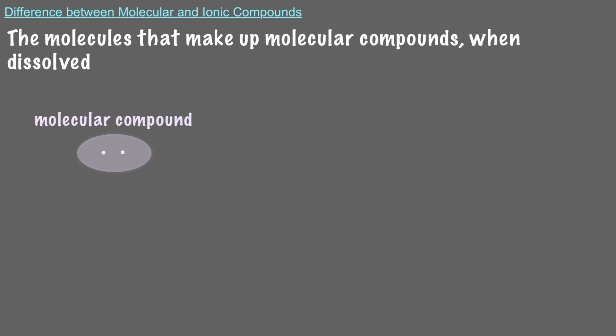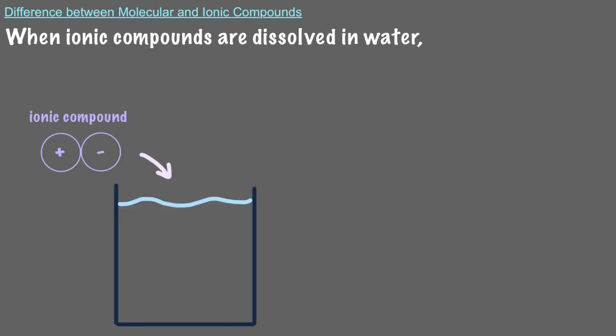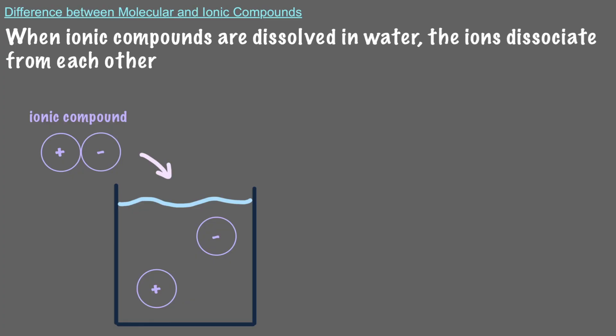The properties we've just learned about molecular and ionic compounds have implications on how they behave when dissolved in water. The molecules that make up molecular compounds, when dissolved in water, stay intact. That is, they do not dissociate. However, when ionic compounds are dissolved in water, the ions dissociate from each other and become surrounded by water molecules. Therefore, ionic compounds only exist in water as aqueous ions.